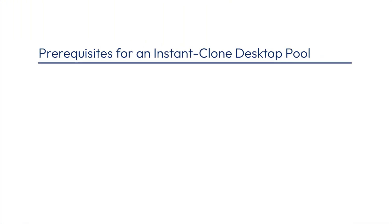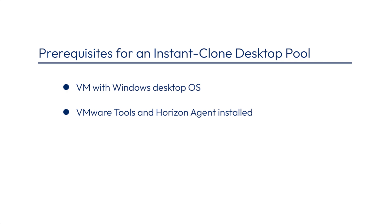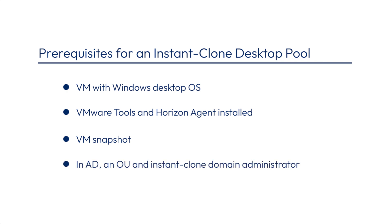Before you can create an instant clone pool, here's what you need: a Windows Virtual Machine that has a desktop operating system installed, along with VMware Tools and the Horizon agent. The complete requirements are listed in the product guide called Windows Desktops and Applications in Horizon 8. After you finish creating the VM in vSphere, power it off and take a VM snapshot of it. You also need to have created an OU in Active Directory and an instant clone domain administrator, as described in an earlier video in the series. You might also want to make a VM folder in vCenter Server inventory to organize the clones in one place.